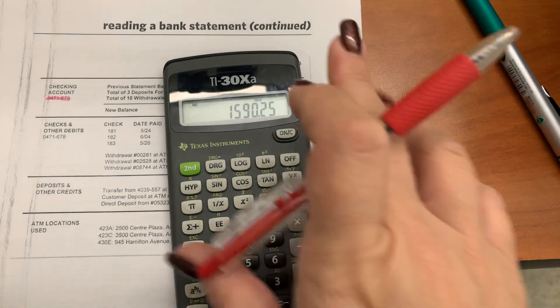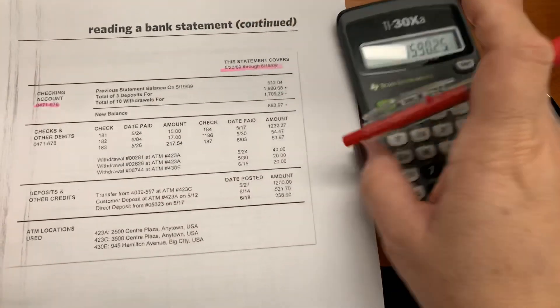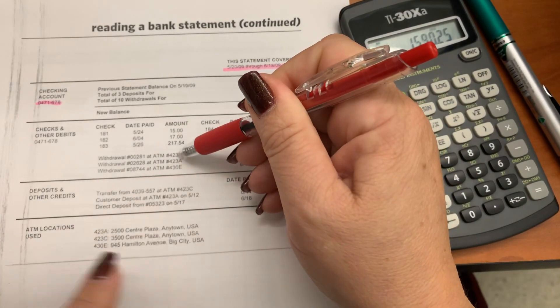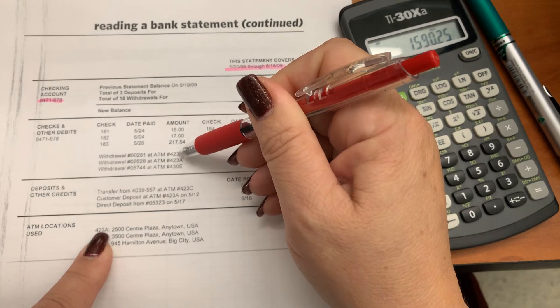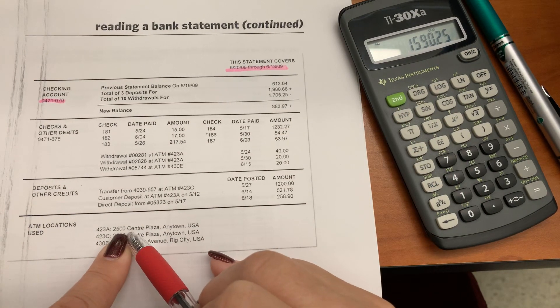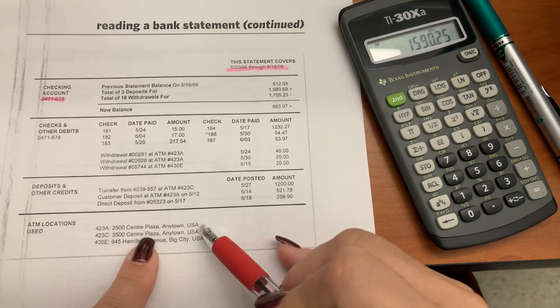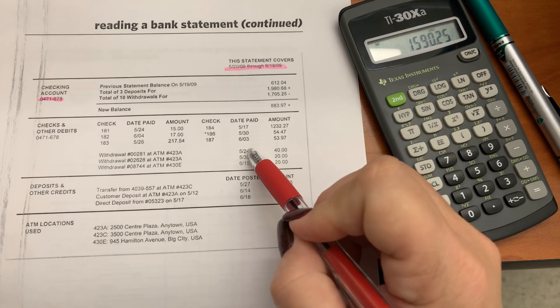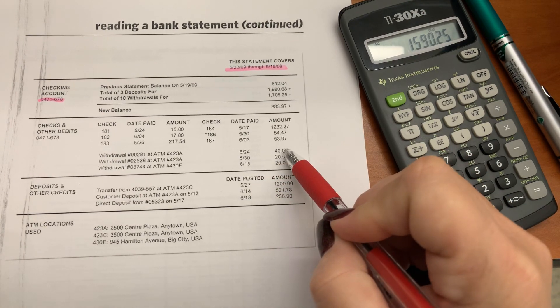So there was some ATM activity. You see ATM withdrawals here. This indicates which ATM was used, which is explained down here in the locations. So this location was at 2500 Center Plaza in E-Town, USA. And it was on the 24th of May for $40. That's how you would read that.